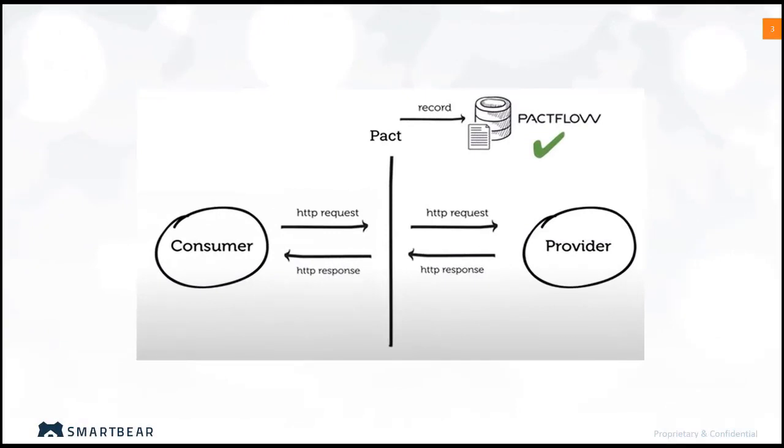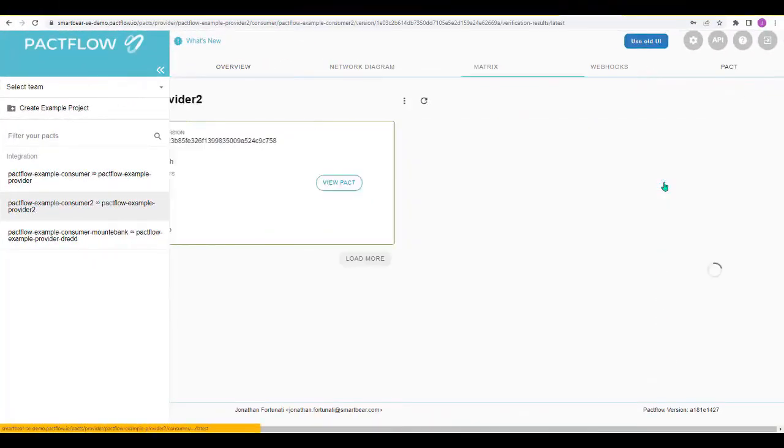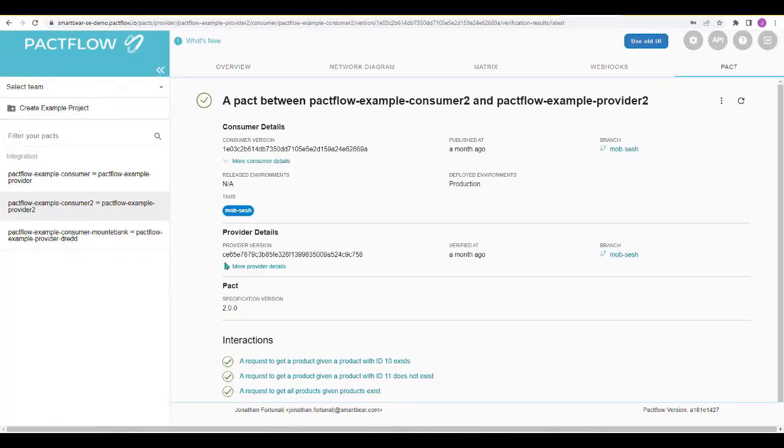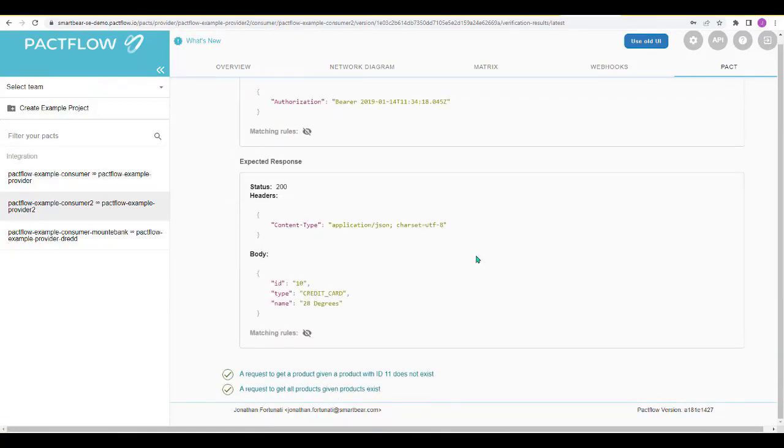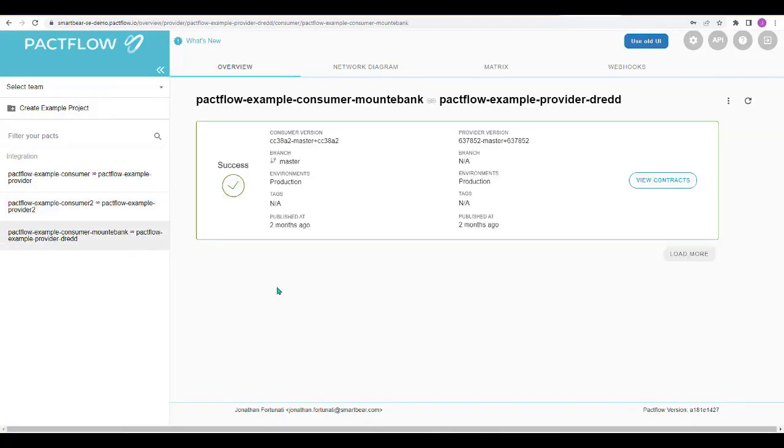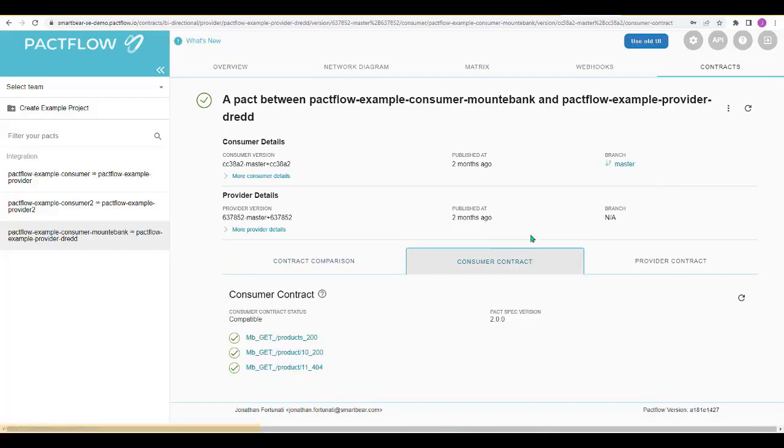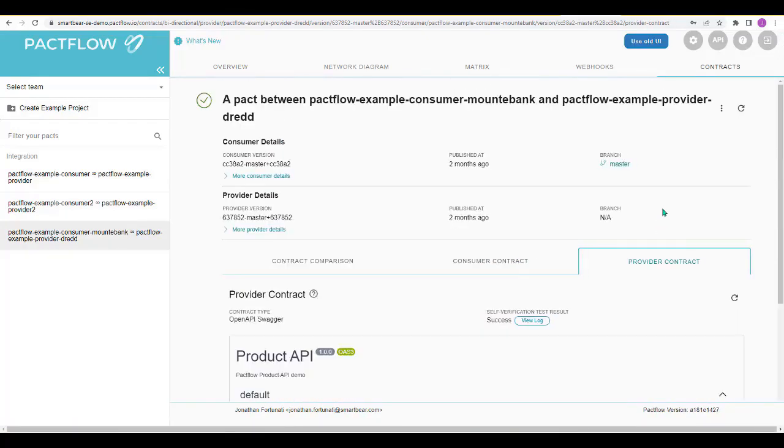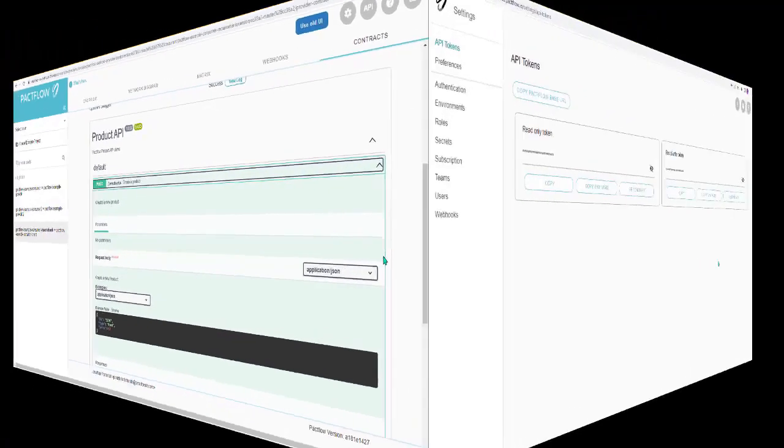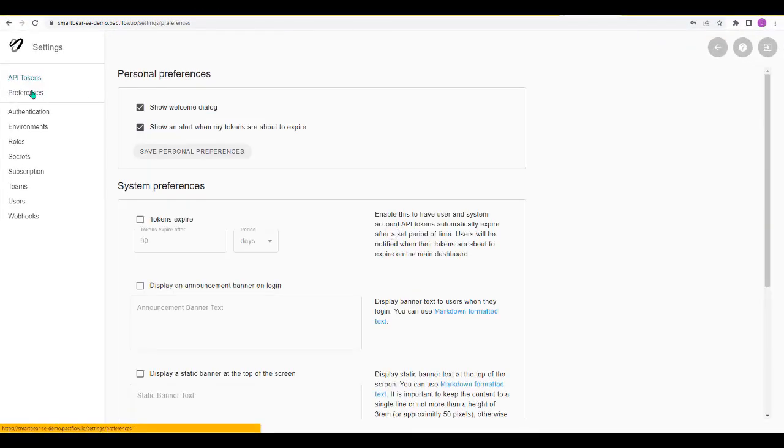PACT flow is a commercial offering of the PACT broker, which adds features required to use PACT at scale, like UIs for verification results and webhooks management, API tokens so you don't have to share basic auth credentials, single sign-on, secrets management and extended collaboration with teams, users, roles and permissions.